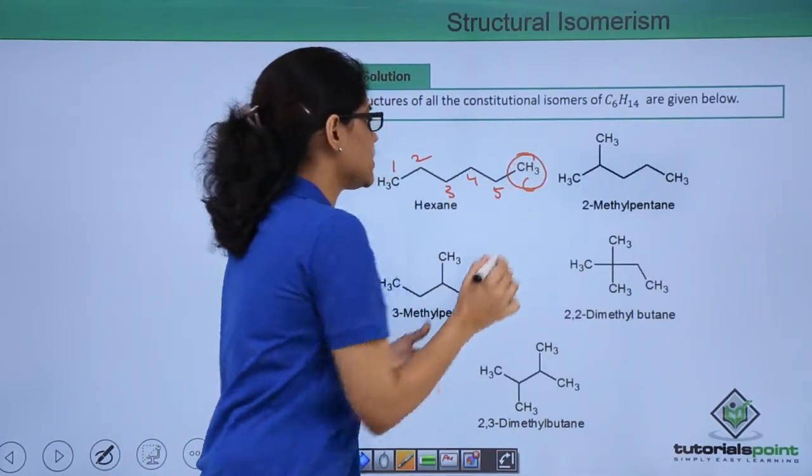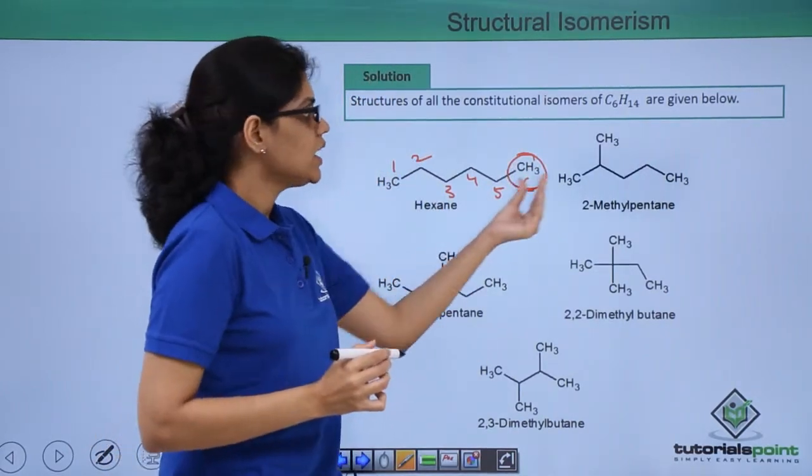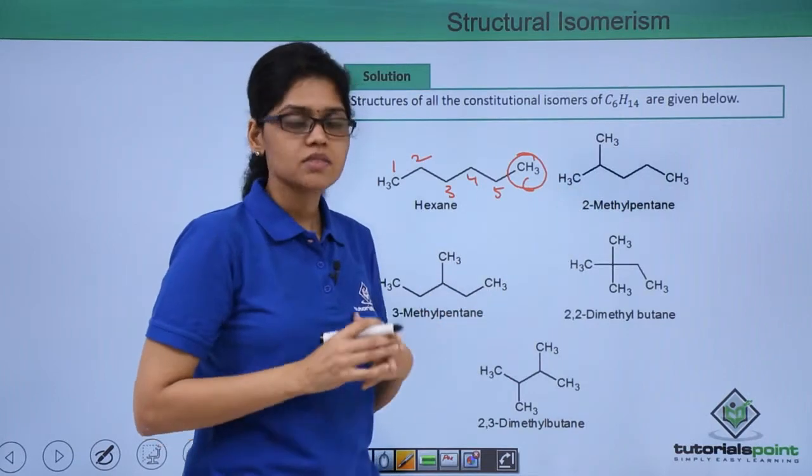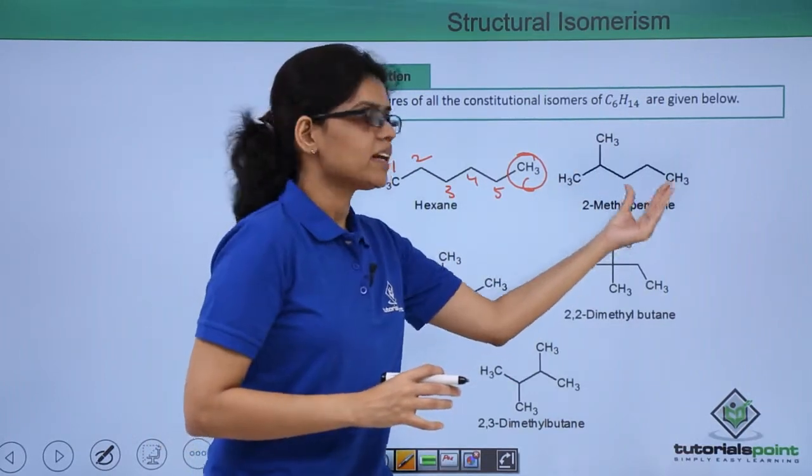If I replace this methyl group and keep it at the C2 position, then I end up getting a structure like this, which is 2-methylpentane.